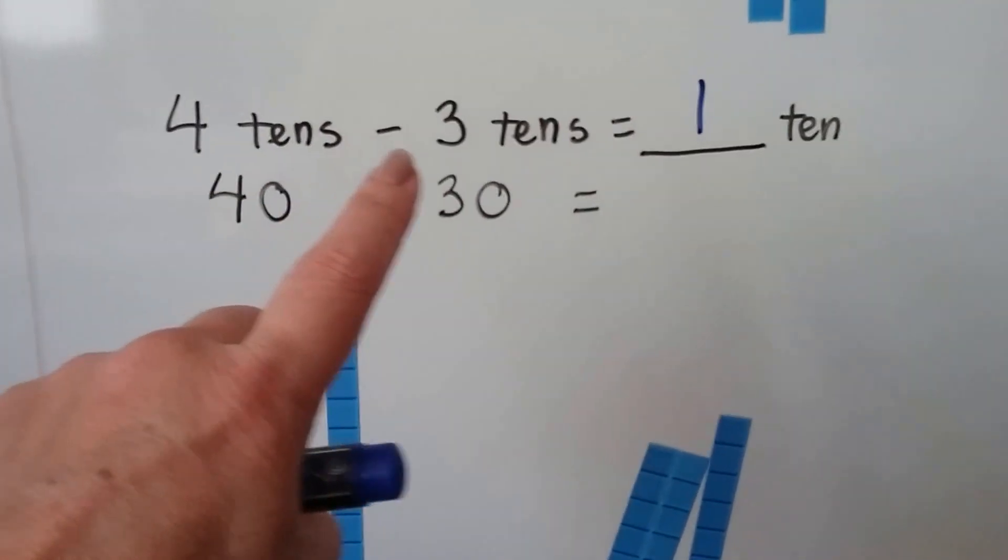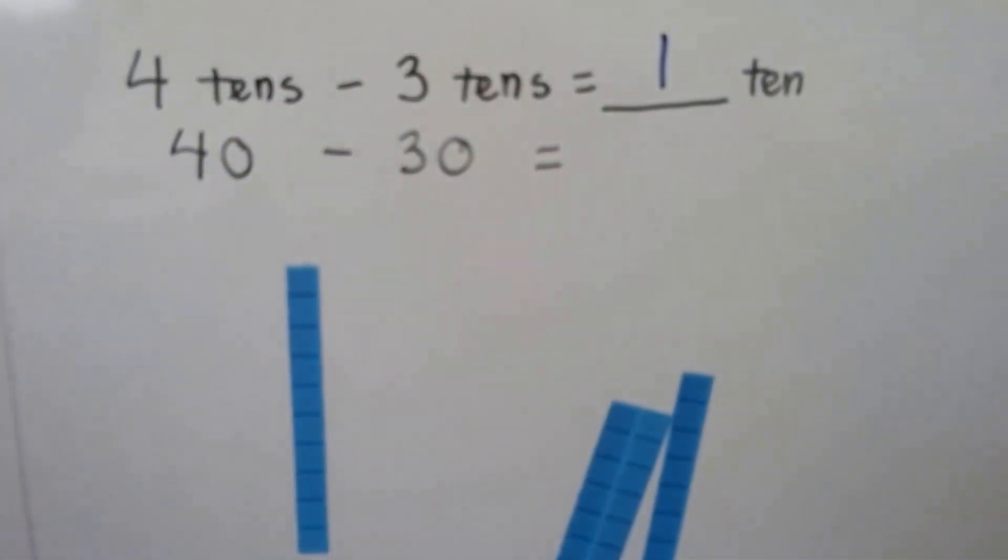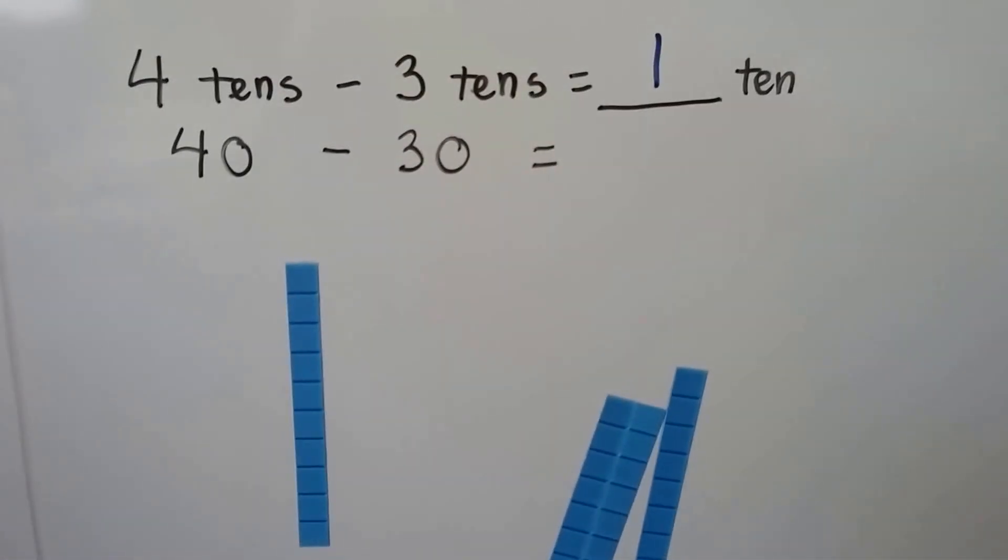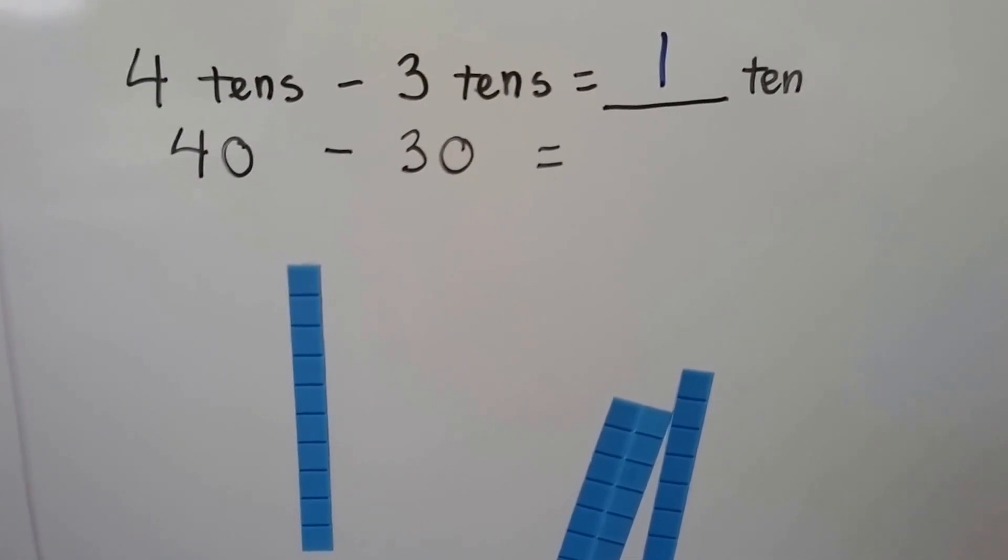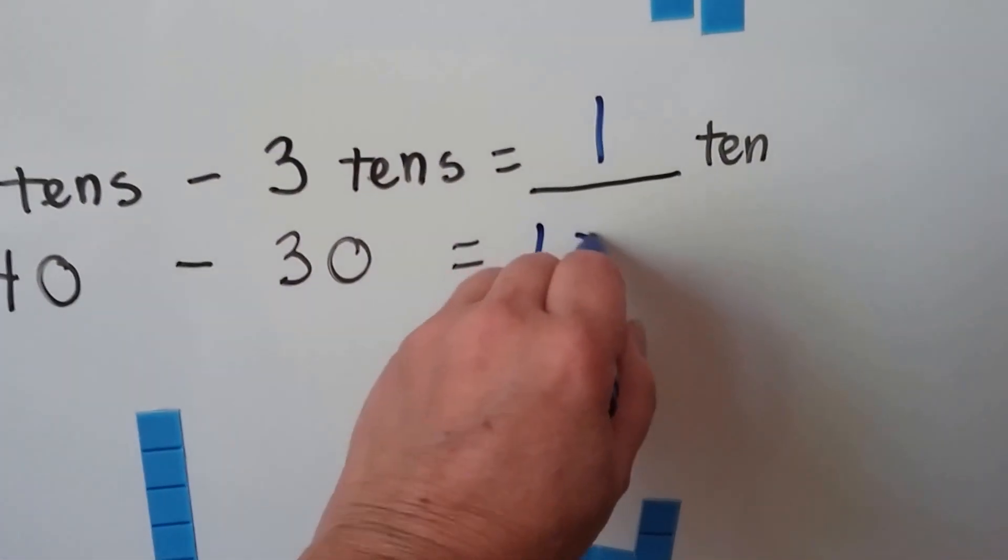Four tens minus three tens is one ten. We just think four minus three equals one. So forty minus thirty, well that would be one ten, wouldn't it? It would be a one zero for a ten.